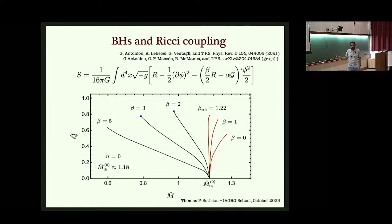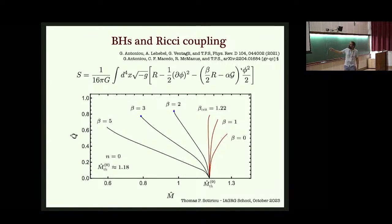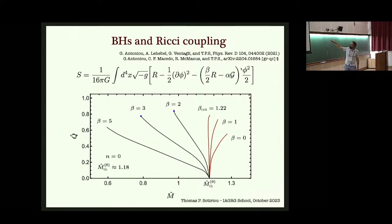Here is the same mass vs. scalar charge plot for this theory including the β φ²R coupling. Setting β = 0 recovers the bad radially unstable curve. Cranking up β to positive values, after some critical value the curves become left-pointing. A proper stability analysis confirms all those solutions are stable and are expected to be the endpoints of scalarization. The non-linearity via the metric hiding in the R φ² coupling is sufficient to give nice properties to the scalarized solutions.